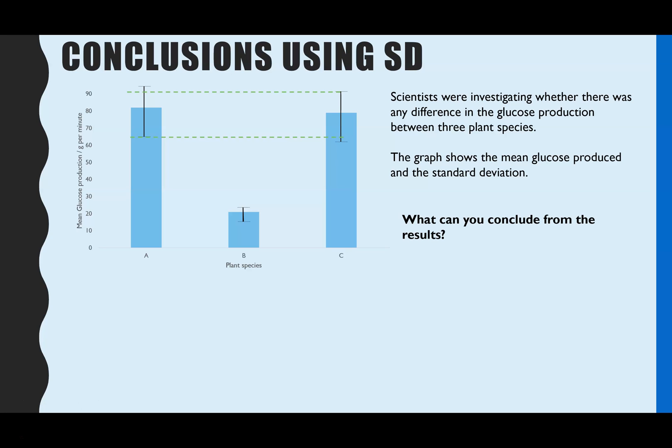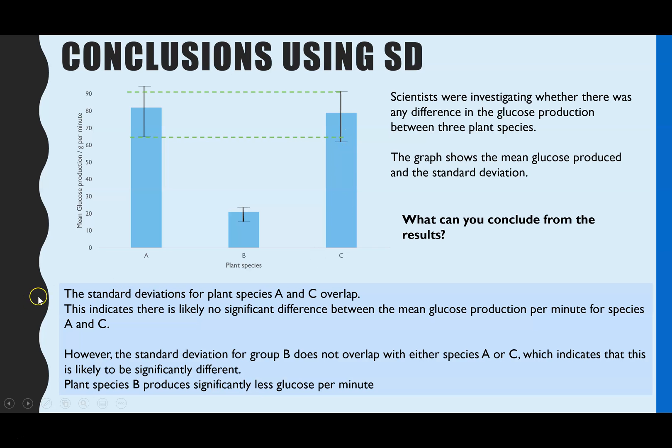Now this time, it's not do you agree, it's what can you conclude from the results. So the first thing to look at then is do any of the standard deviation bars overlap. And we can see that for plant species B, there's no overlap with A and C. But A and C, there is an overlap. And I've done this dashed line to show the top of the standard deviation bar for C. We can quite clearly see it overlaps with A. And the same here, the bottom of the standard deviation of A is overlapping with C. So that would be the first thing that you would state in your answer. The standard deviations for plant species A and C do overlap. Then you go on to say what that means.